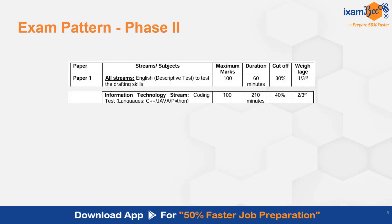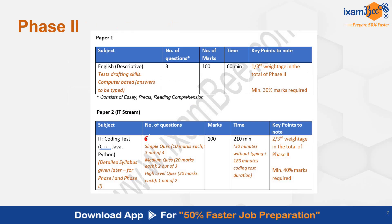In phase 2, you have two papers. Paper 1 is Descriptive English and paper 2 is your Coding paper, in which you have to write code in either C++, Java, or Python. You will have to attempt 6 questions out of the given 9. There are 4 simple questions of 10 marks each, out of which you attempt 3. There are 3 medium-level questions of 20 marks each, out of which you attempt 2, and there are 2 high-level questions out of which you attempt 1.